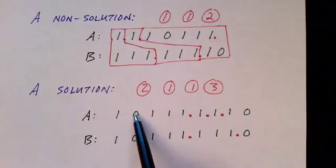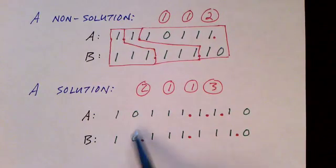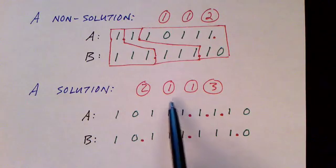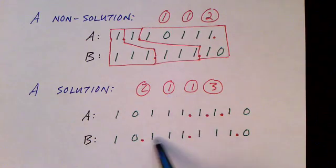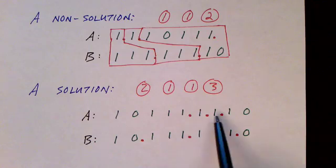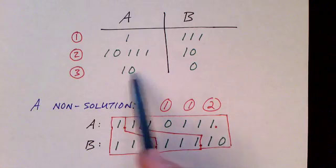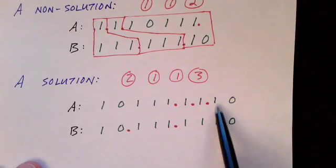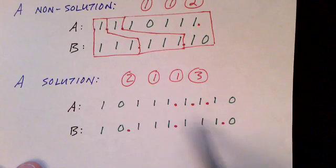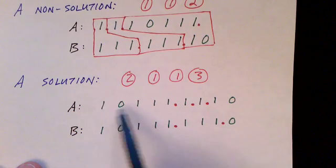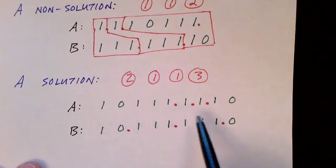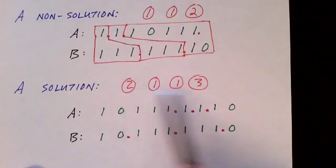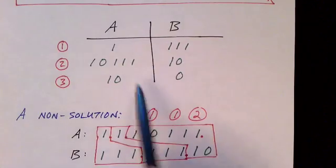Here is another sequence of tiles and you can see that this is a solution. Here we are using tile two: one zero one one one, one zero one one, and one zero on the bottom. Then tile one which is a one on top and a one one one on the bottom. And finally tile three: one zero on the A side and zero on the B side. You can see this time the two strings do match up. So this is a solution to this instance of the problem.